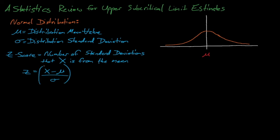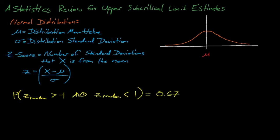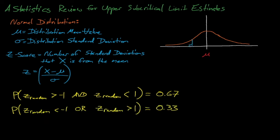Since this well-known bell curve normal distribution is a probability distribution function, the area under the curve of the normal distribution represents the probability that a random sample from that distribution will fall within that range. The probability of randomly drawing a point that is within one standard deviation of the mean is about 67%, while the probability of drawing a point that is more than one standard deviation from the mean is about 33%.